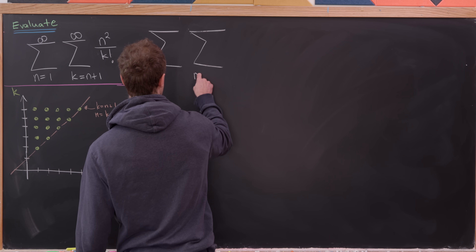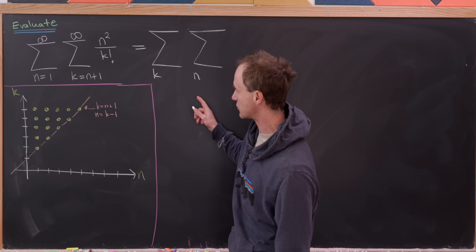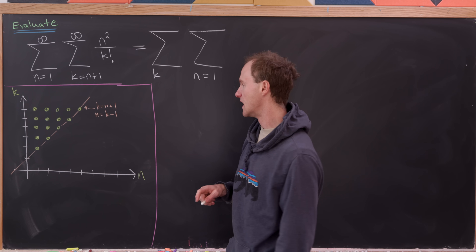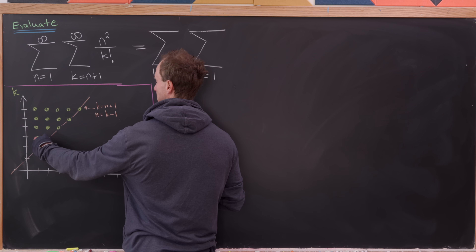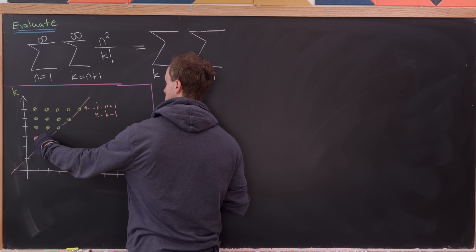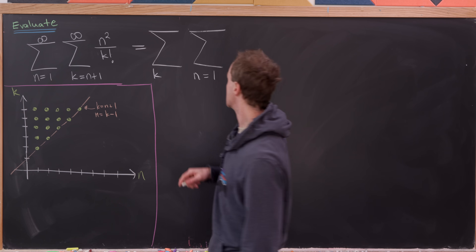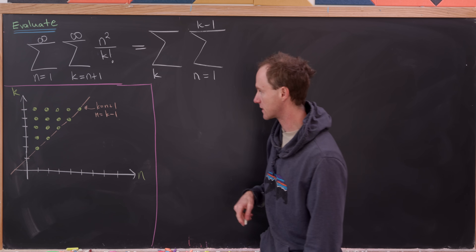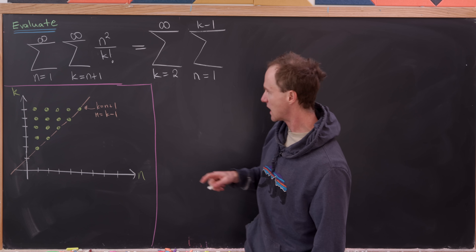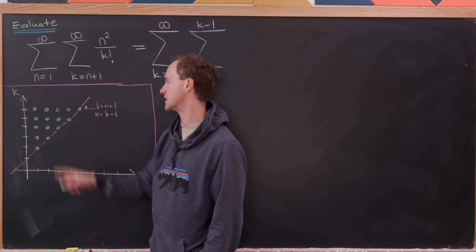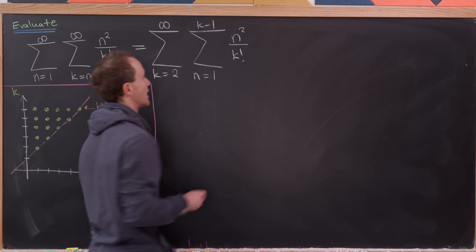Let's focus on the n sum. The smallest value of the n sum will still be 1, and the largest value will be k minus 1. So we're summing from n equals 1 to n equals k minus 1. The values of k will start at 2 and go to infinity, because k starts at n plus 1. The summand is the same: n squared over k factorial.